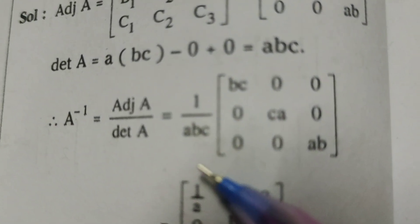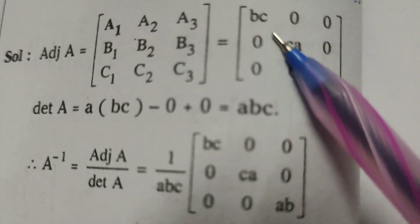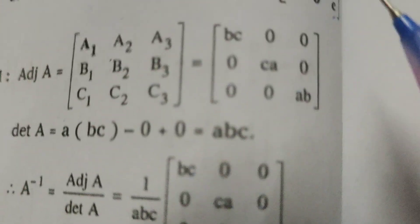Formula here, A inverse means adjoint A by det A. Therefore 1 by abc into, here write adjoint A, adjoint A matrix.